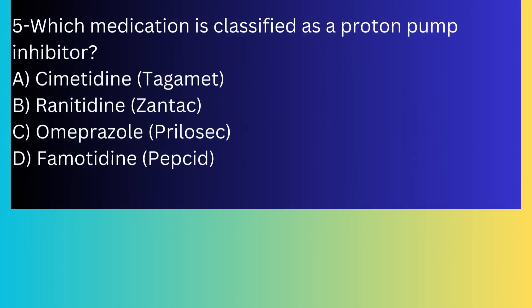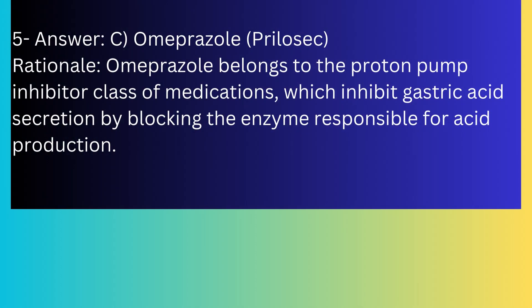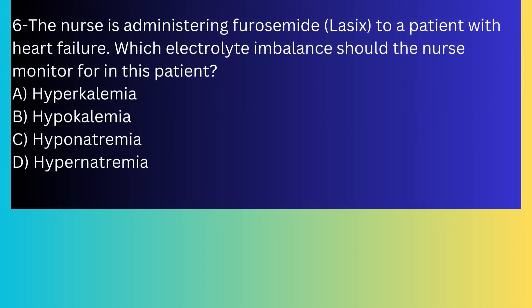Question number five: Which medication is classified as a proton pump inhibitor? A) Cimetidine (Tagamet), B) Ranitidine (Zantac), C) Omeprazole (Prilosec), D) Famotidine (Pepcid). The answer is C, omeprazole (Prilosec). Omeprazole belongs to the proton pump inhibitor class of medications, which inhibit gastric acid secretion by blocking the enzyme responsible for acid production.